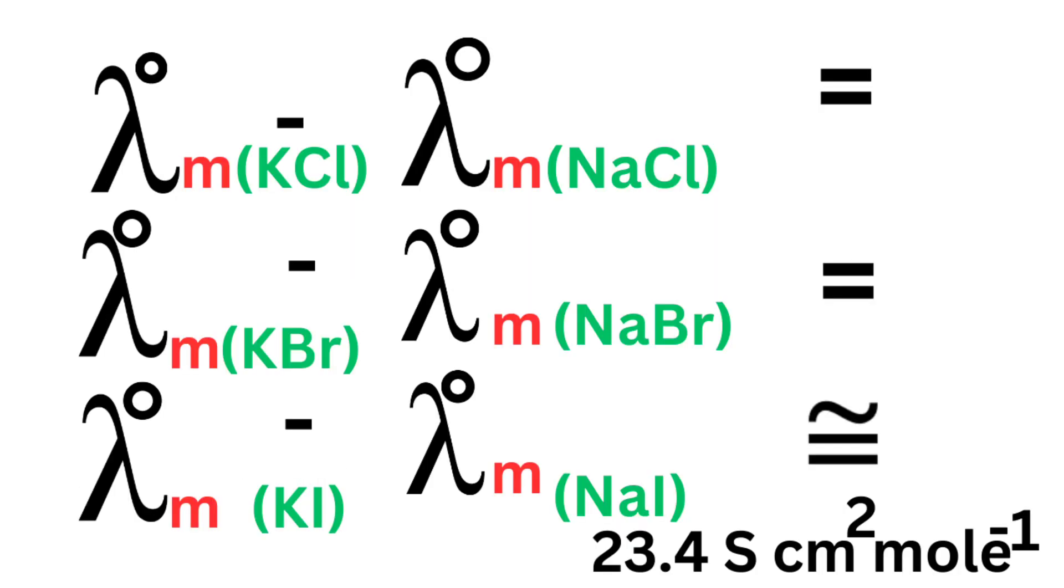For example, see here the limiting molar conductivity of KCl and NaCl. The difference between them is 23.4 Siemens square centimeter per mole. Same value obtained for difference of limiting molar conductivity of potassium bromide and sodium bromide, and same for potassium iodide and sodium iodide.